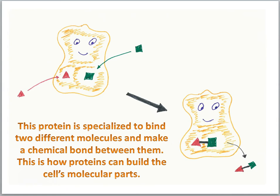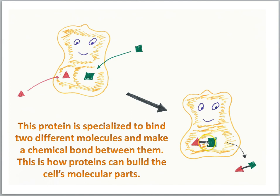Here's our protein. Notice we have a red triangle molecule and a green square molecule, and this protein is specialized to bind the two — they will stick to these two spots on the protein. Then the protein will make a chemical bond between them. This is how proteins can build the cell's molecular parts. Remember, cells are composed of molecules, and there are teams of proteins whose job it is to perform chemistry on basic nutrients so as to build useful molecules for the cell.